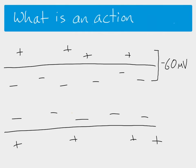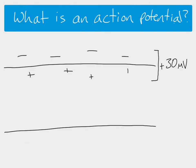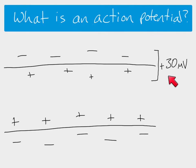The next thing is something called an action potential. An action potential is where we get a sudden change and we get to a difference of plus 30 millivolts. Because we've now got a positive number, that means that the inside is more positive than the outside. So we need to change our signs. During an action potential, the relative charge on each side of the membrane would be more positive on the inside of the neuron and more negative — or less positive — on the outside. This number, plus 30 — sometimes it's given as plus 40 — is the potential difference reached at the peak of an action potential.